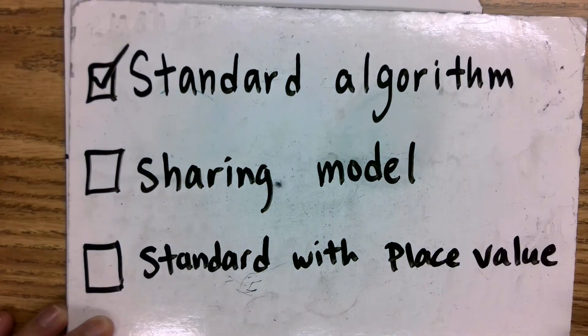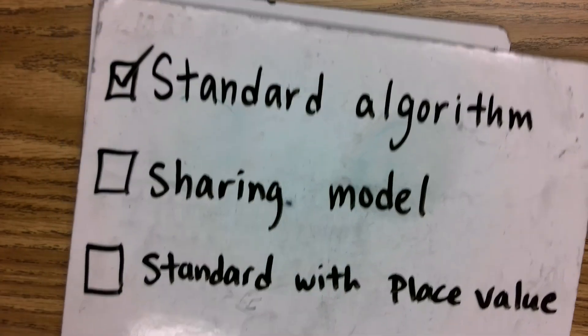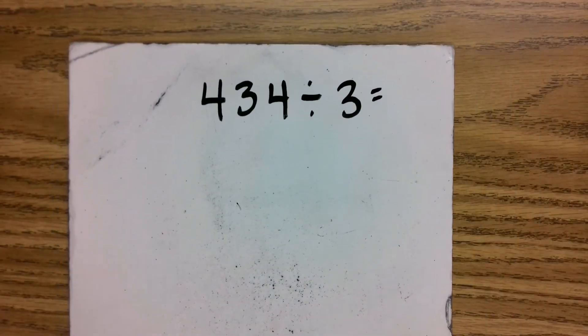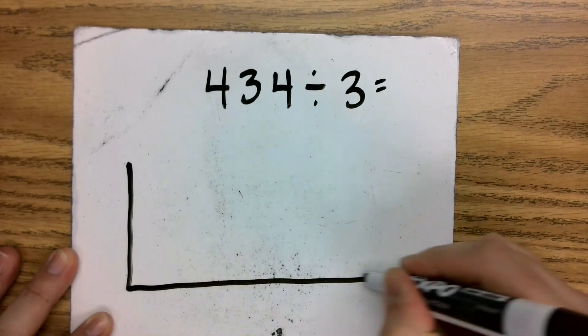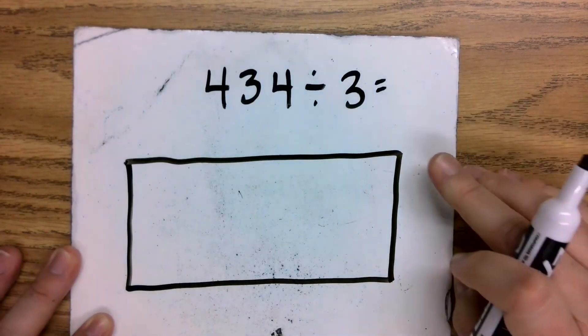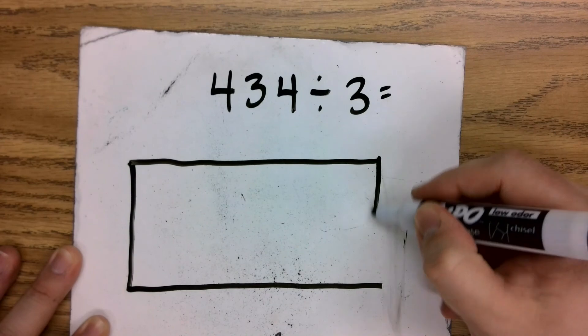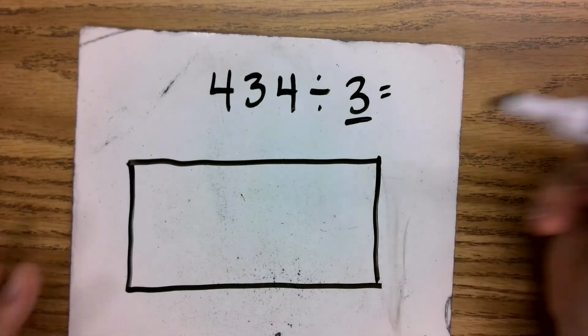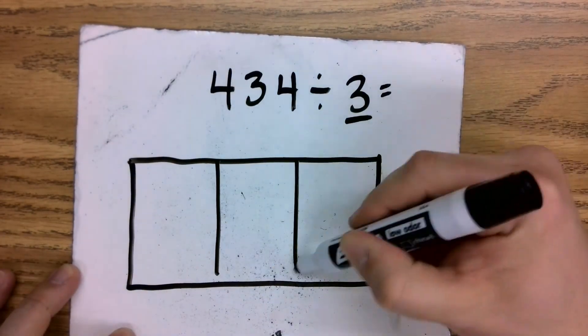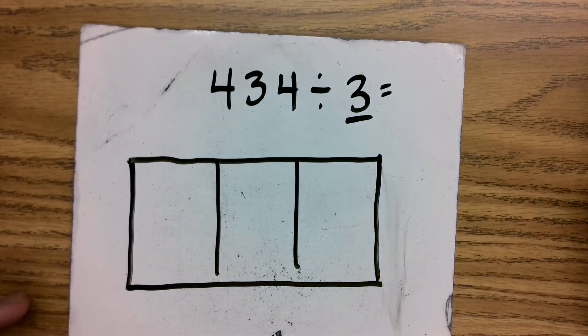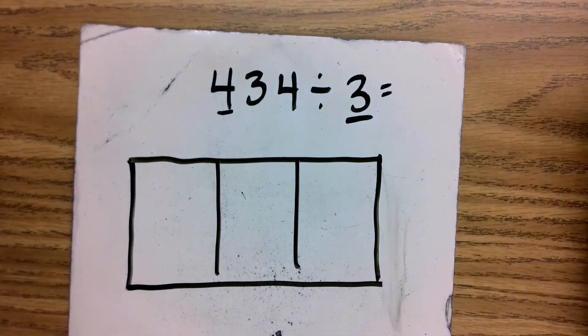Once again, we've done that way. Now we'll be going on to the sharing model where we have the same problem, 434 divided by 3. One thing that's interesting about this model is we're not going to have a house necessarily, we will have a box that will house all of our numbers. So we're going to put a box here. We're dividing into three different groups. So inside this box, we will divide it into three, and we're going to first start out with 434.